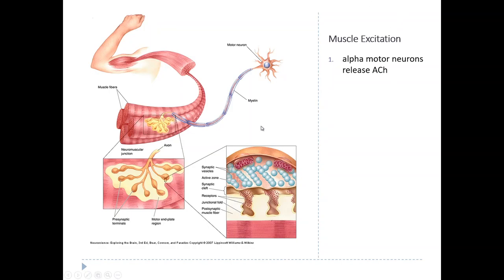The neuromuscular junction is a special kind of synapse. The motor neuron branches and actually makes multiple connections or terminals with the muscle. The surface of the muscle fiber forms a structure called a motor end plate. Each little synaptic terminal is basically a big bundle of synaptic vesicles, and each contact point is packed with synaptic vesicles all containing acetylcholine. On the postsynaptic muscle fiber side, the membrane is really specialized to be stimulated by the acetylcholine.